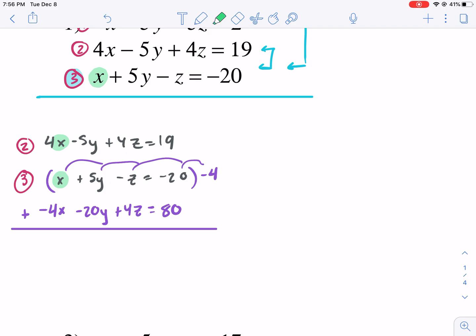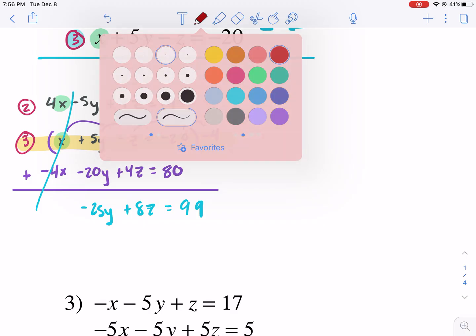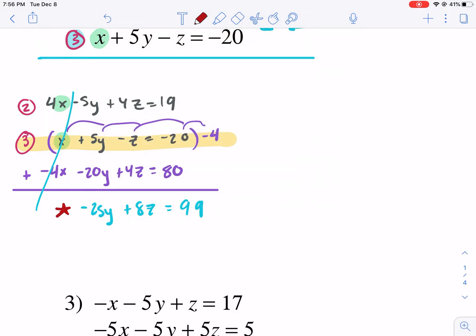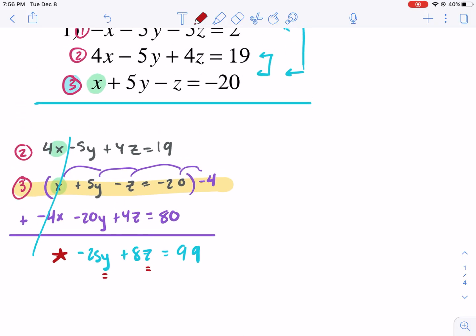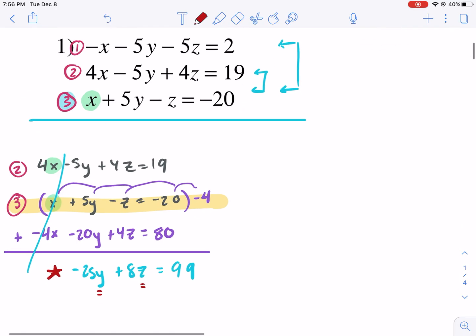And I get positive four, 4z equals positive 80. And now I'm going to add these two together. So ignore this middle line for now. I'm going to be moving from two to this bottom one, this is my altered one. I'm going to do my edits in blue. So after I add, I eliminated my x's, that's the whole point. And I get negative 25y, if I add those plus 8z, if I add those equals 99. Now what I'm going to do is I'm going to put a star next to this guy.